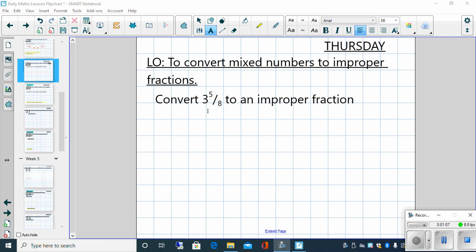We need to think 3 whole lots of 8 eighths. So this is effectively 3 lots of 8 eighths and 5 eighths added to it as well.